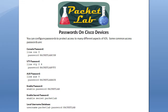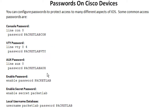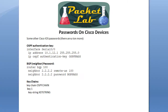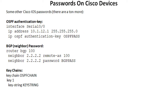This slide shows some of the more common passwords you'll use on Cisco devices: your console, VTY, and auxiliary passwords; your enable password; enable secret, which is a different beast we'll touch on later; and your local username database with username and password pairs. All of these are stored by default in clear text. There are also passwords you might not think of — like your OSPF authentication key, BGP neighbor password, and key-chain key strings — all stored in clear text by default.